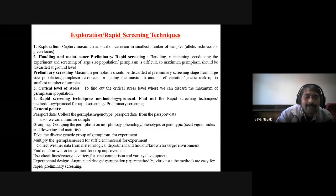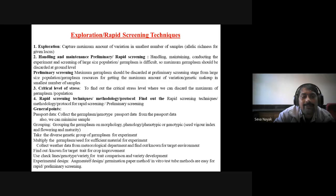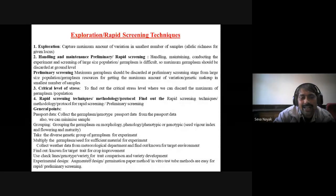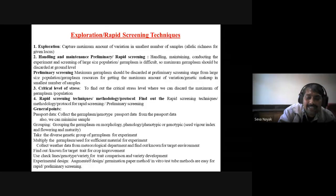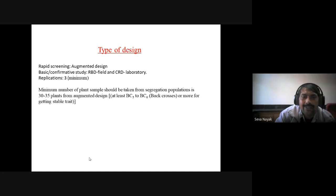Experimental design: augmented design, paper germination method, and test tube method are the easy and rapid methods for preliminary screening of large populations, because CRD and RBD in field conditions with replication levels cannot accommodate large populations — too time-consuming and space-requiring. The minimum number of plant samples from a segregating population should be 30 to 35 plants. From an augmented design, more germplasm samples can be accommodated. At least five to six backcrosses are needed for obtaining stable heritable characters before starting.